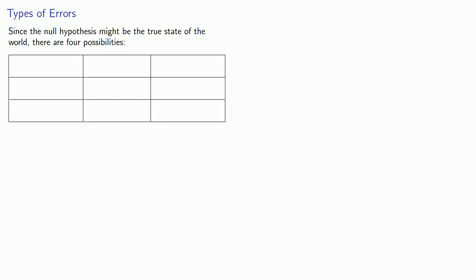There are different types of errors. Since the null hypothesis might be the true state of the world, there are four possibilities. The null hypothesis might be true or false, and we might have rejected or failed to reject the null hypothesis.